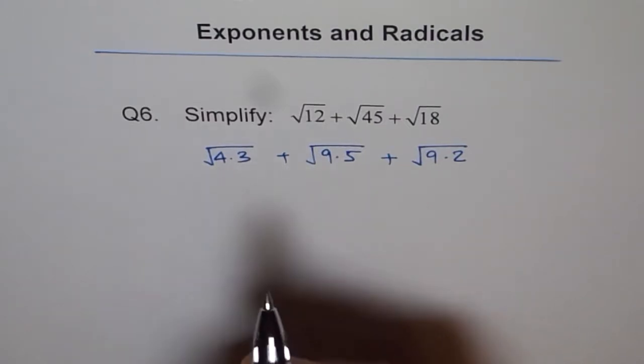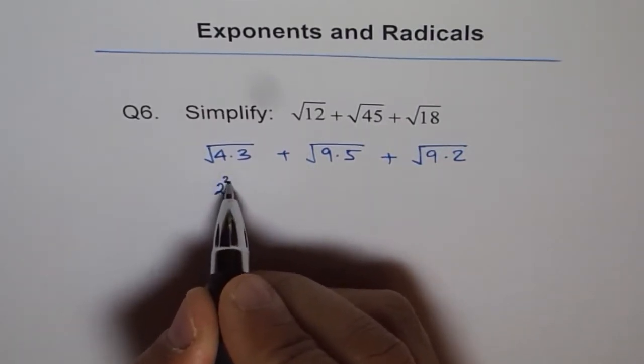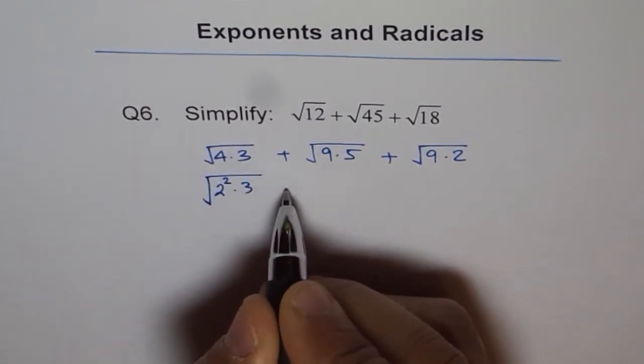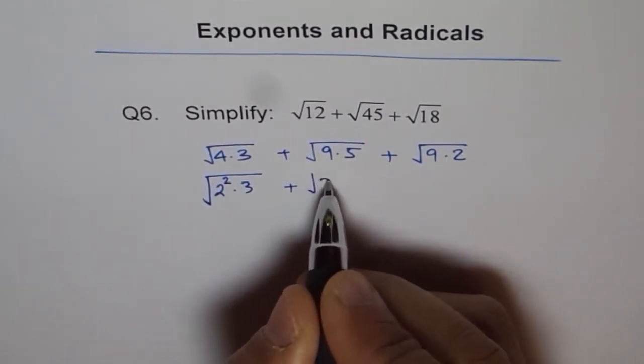4 is a square of 2. Think like this: 4 is 2 square. That is why I wrote like this. And 9 is 3 square.